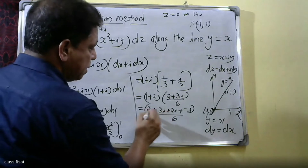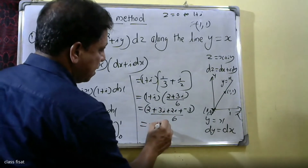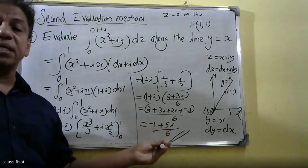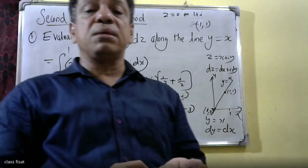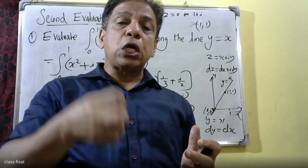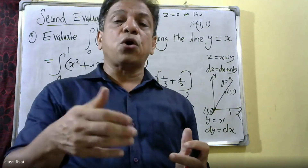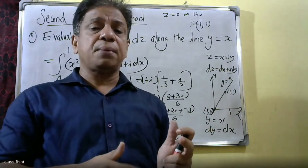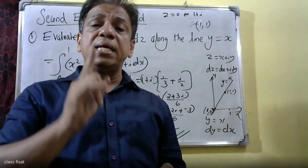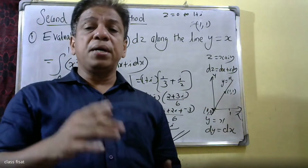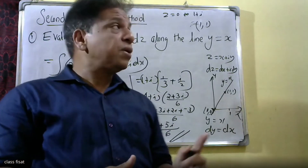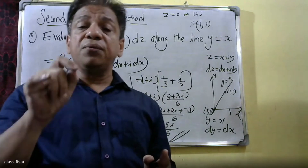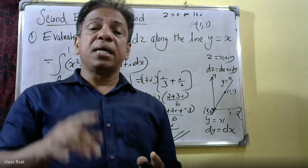That is equal to 2 minus 3 plus 5i, giving minus 1 plus 5i, divided by 6. So the final answer is minus 1 plus 5i by 6. For the second evaluation method, we solve the same problem by shifting either x or y. We again write z equal to x plus iy, so dz equals dx plus i dy.